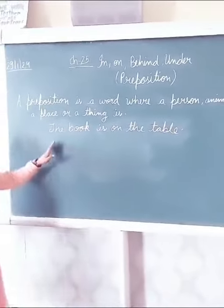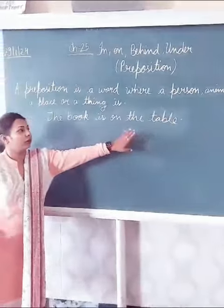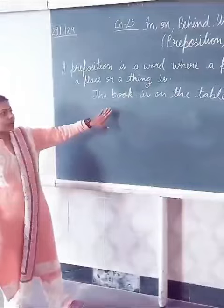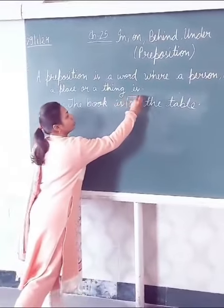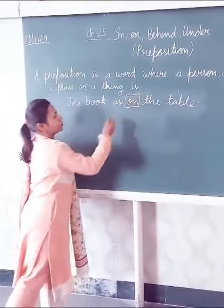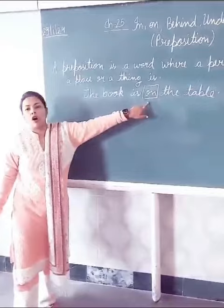Here the book is on the table. So where is the book? The book is on the table. The preposition word is 'on'.